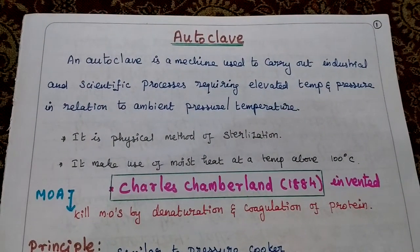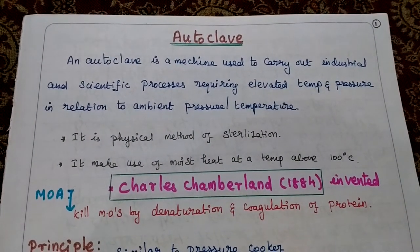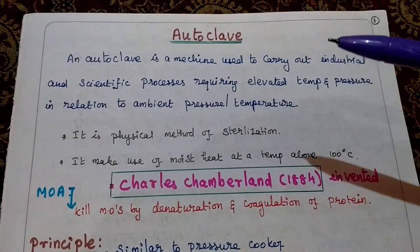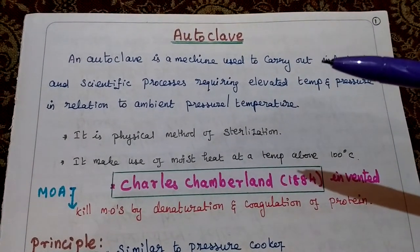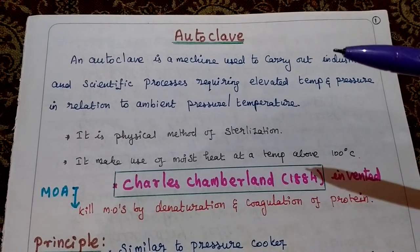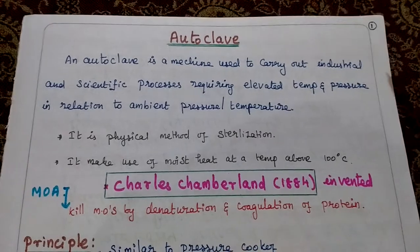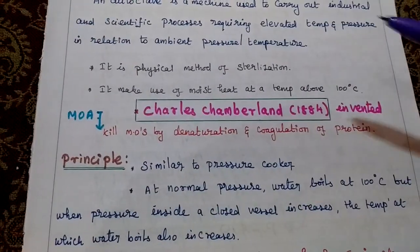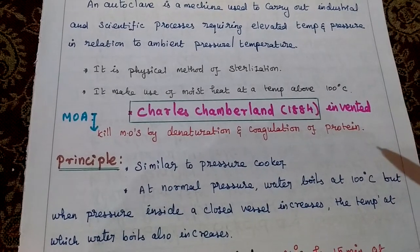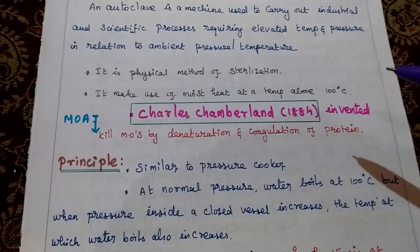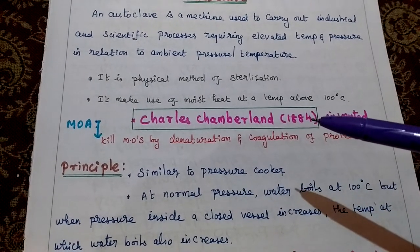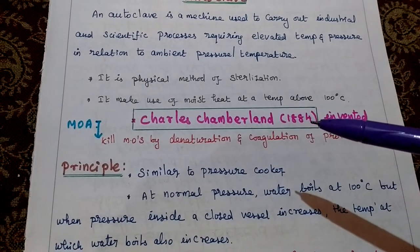Autoclave. An autoclave is a machine used to carry out industrial and scientific processes requiring elevated temperature and pressure in relation to ambient pressure or temperature. It is a physical method of sterilization that makes use of moist heat at temperatures above 100 degrees Celsius. The autoclave was first invented by Charles Chamberlain in the year 1884.